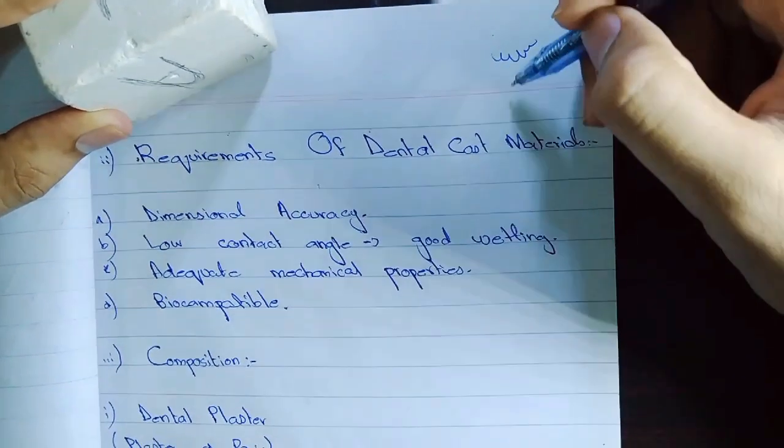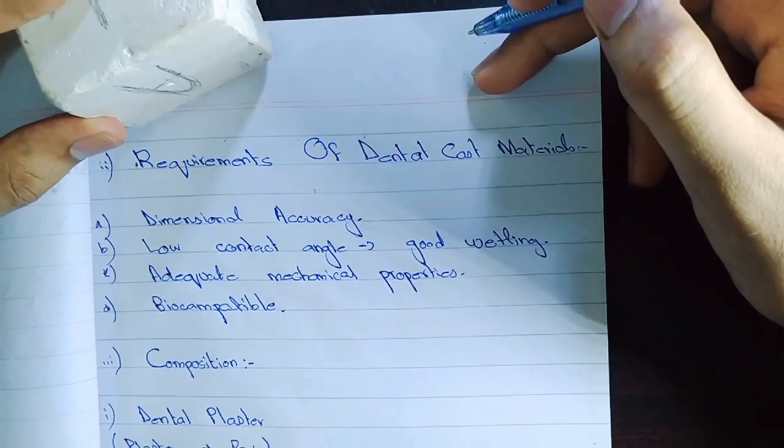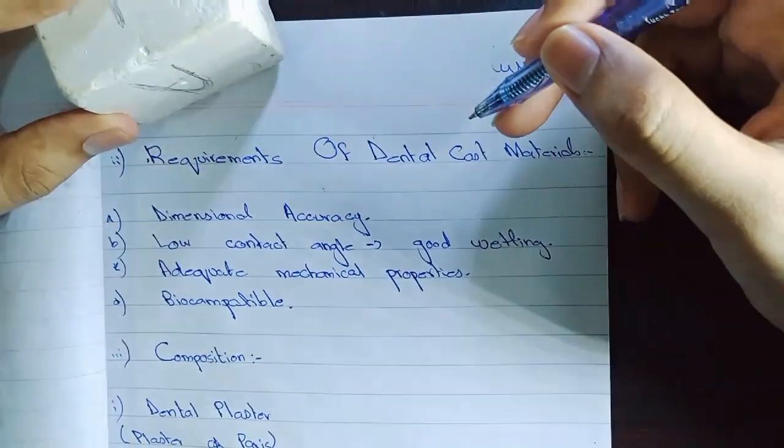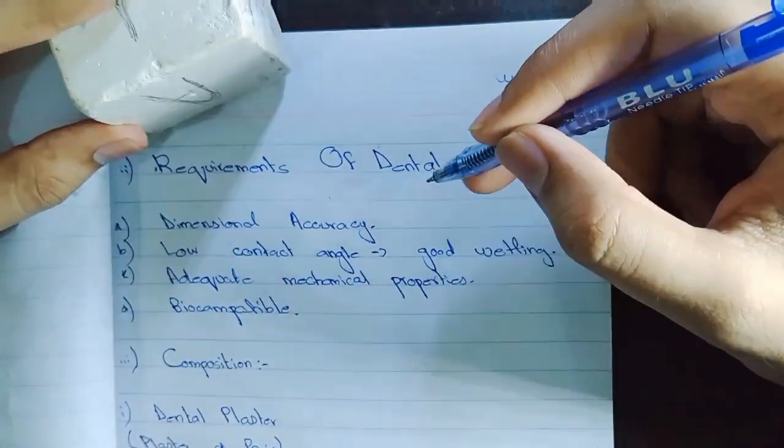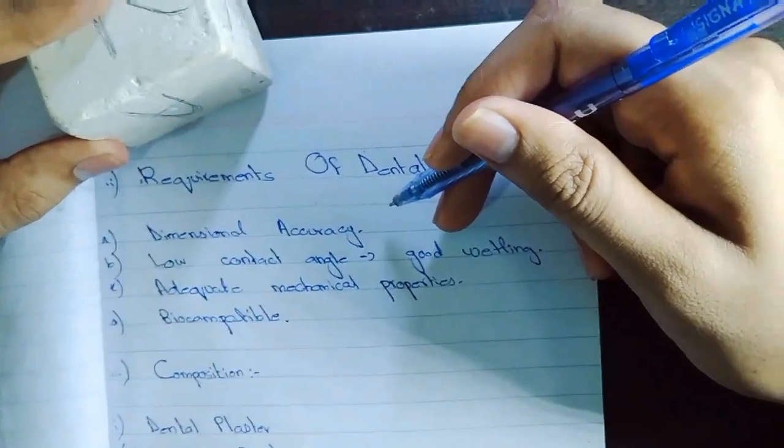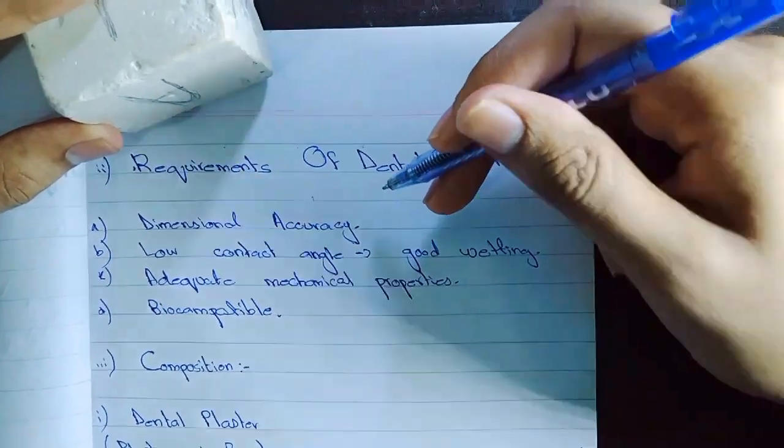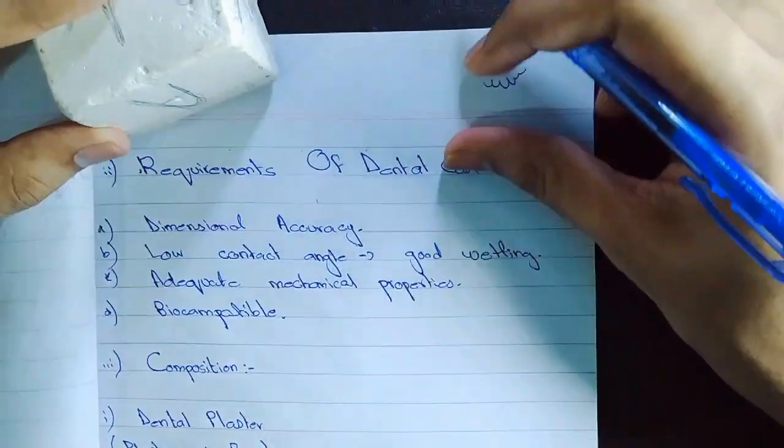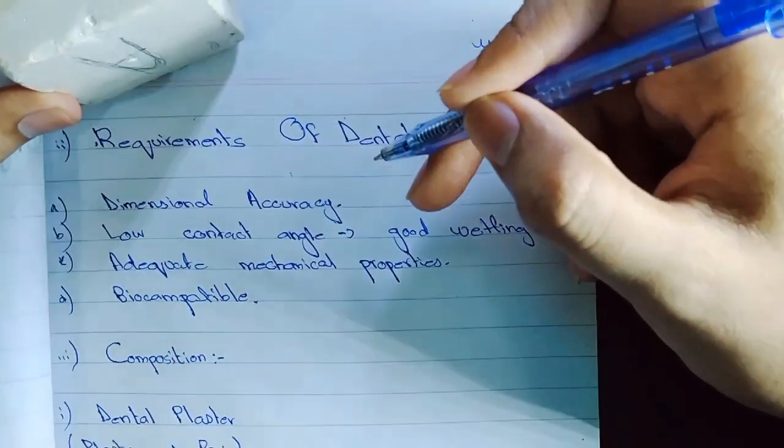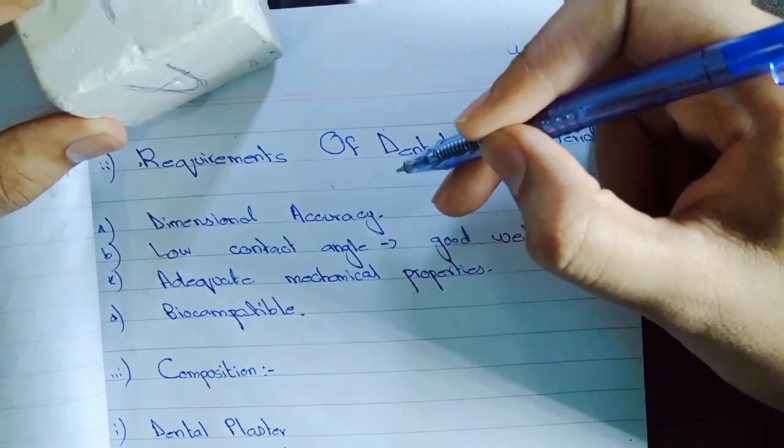Now the requirements of dental cast materials. Keep in mind that among all the dental materials there are few common 4 to 5 requirements that would make your dental material a perfect material. Number 1 is Dimensional Accuracy. Dimensional Accuracy means that your material should undergo minimal dimensional changes before and after the setting. Your material should not contract so much before and after the setting, or it should not expand so much before and after the setting, that it would make it less adequate.